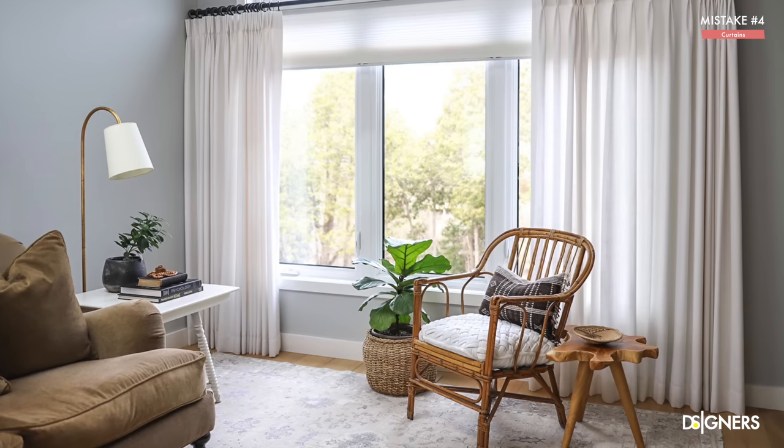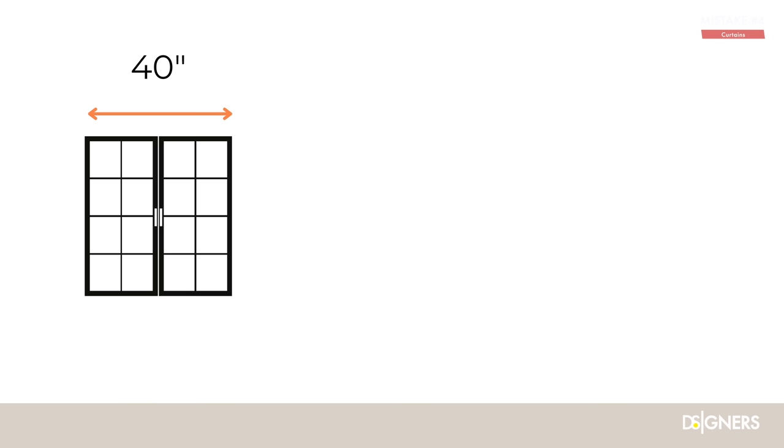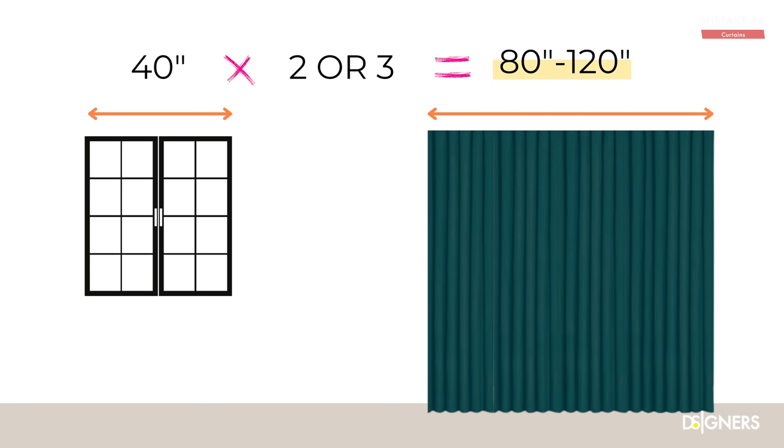Mistake four is having curtain panels that are not wide enough for your windows. For an elegant look, curtain panels should be wide enough that when closed there's fullness to them. To achieve this elegant appearance, the width of the curtain should be two or three times wider than the window. For example, if you have a four-foot window, multiply it by two or three — that is the curtain width you need.